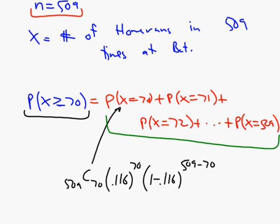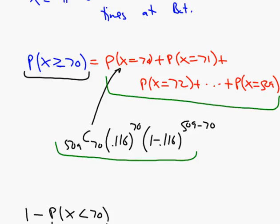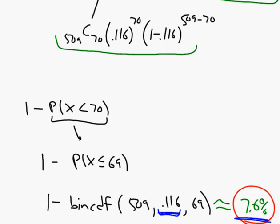And when we looked at it, we realized we had to add all these different cases, which would mean quite a bit of computation. Now, luckily for us, our TI-84 has a binomial CDF function, and it could do things for us. We described how to do that and ended up with a probability of 7.6%.